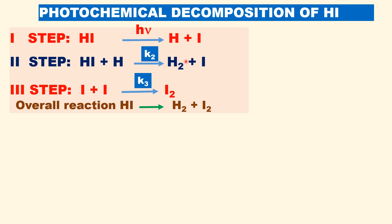The rate constant for the second step is K₂. In the third step, the iodine atoms formed in the first and second steps recombine to give the iodine molecule I₂. So the overall reaction for decomposition of HI is: HI → H₂ + I₂, in the presence of light.